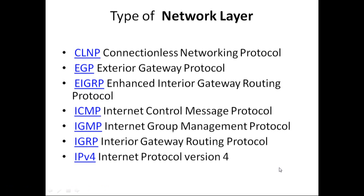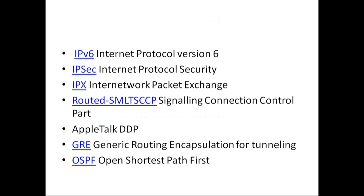Network layer use of protocol: Types of network layer protocols include CNP (Connectionless Networking Protocol), EGP (External Gateway Protocol), EIGRP (Enhanced Internet Gateway Routing Protocol), ICMP (Internet Control Message Protocol), IGMP (Internet Group Management Protocol), IGRP (Internet Gateway Routing Protocol), IPv4 (Internet Protocol Version 4), IPv6 (Internet Protocol Version 6), IPSec (Internet Protocol Security), and IPX (Internet Network Packet Exchange).